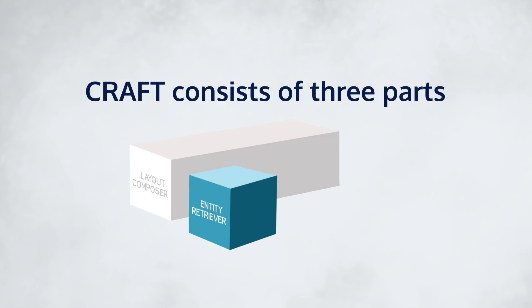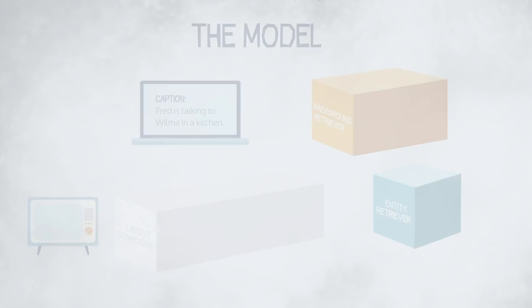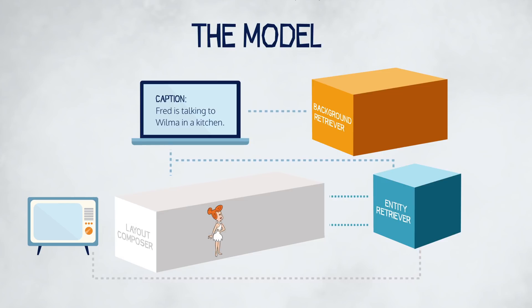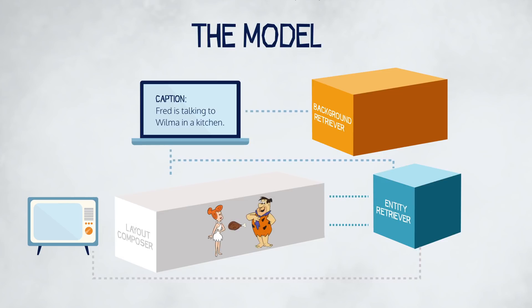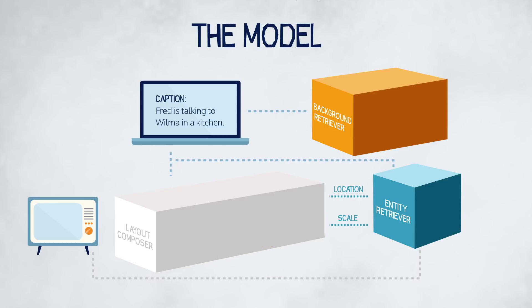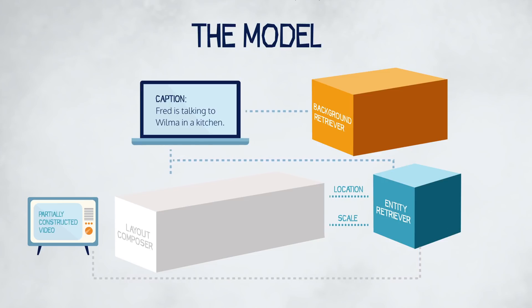CRAFT consists of three parts: the layout composer, the entity retriever, and the background retriever. Each part is a neural network that is trained independently using ground truth supervision. The layout composer is responsible for generating a plausible layout of the scene consisting of the locations and scales of each character and object mentioned in the scene description. The task of the entity retriever is to find a spatiotemporal patch within a target database that matches an entity in the description and is consistent with the video constructed thus far.